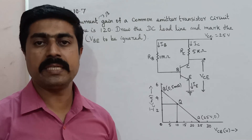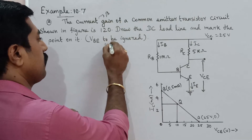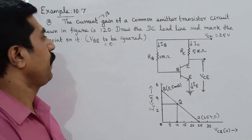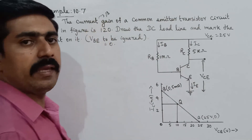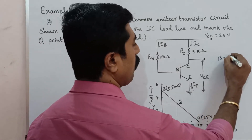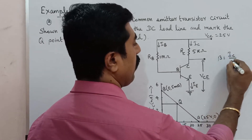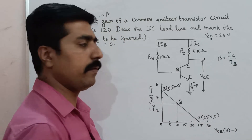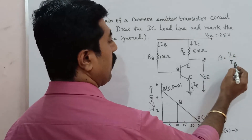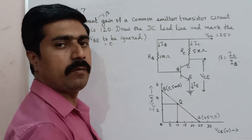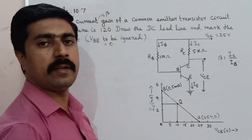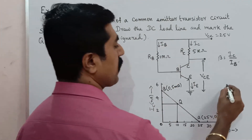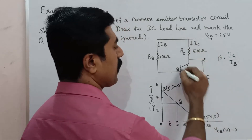The base-emitter voltage VBE is approximately equal to zero, so we will ignore it. Looking at the common emitter configuration — the output section and input section of the circuit.